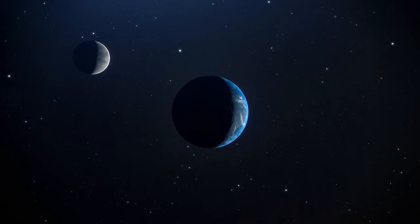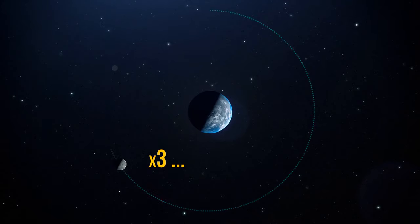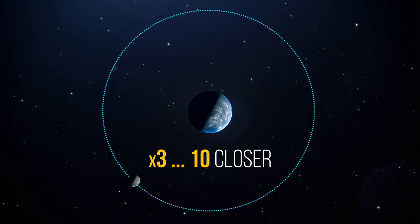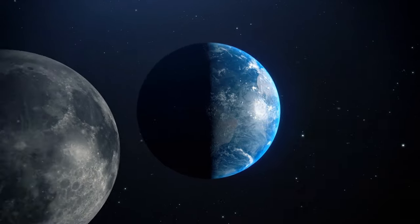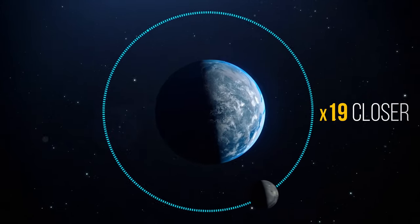But the coolest thing? When the Moon did have an atmosphere, the satellite was 3 to 10 times closer to our planet. One computer simulation even suggests the Moon was probably up to 19 times closer than it is now.